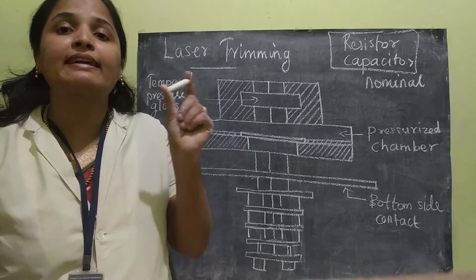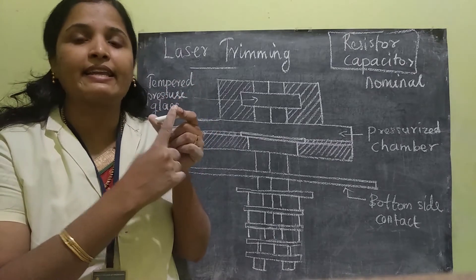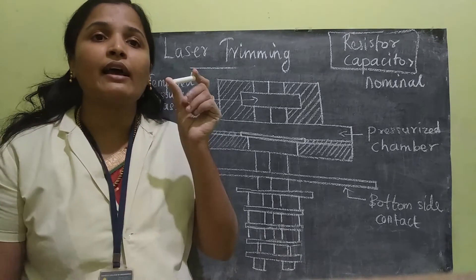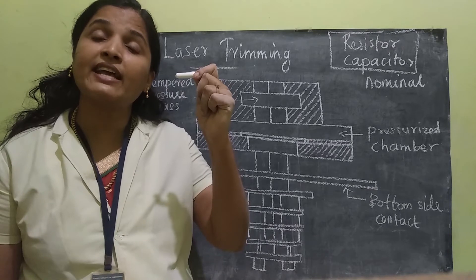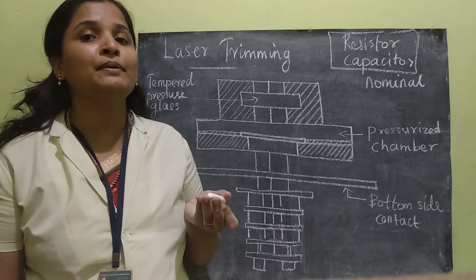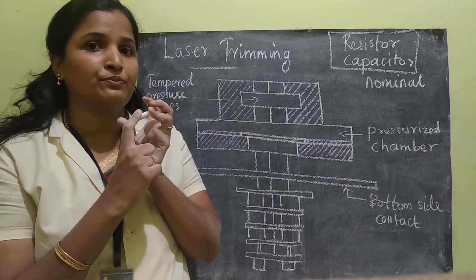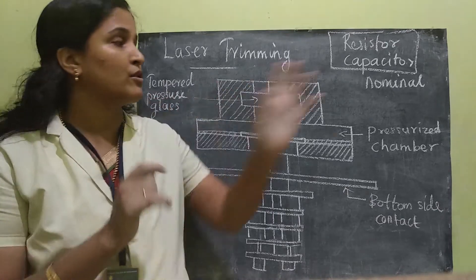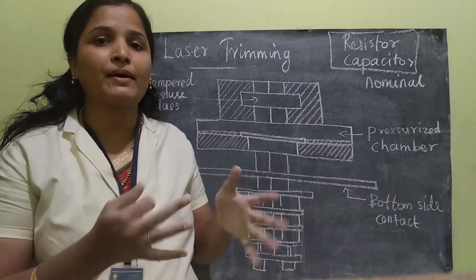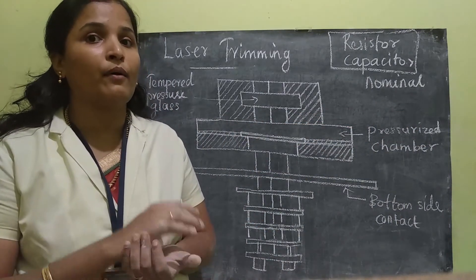If I want to increase the resistance of this particular material, I will just reduce the area by trimming or removing some portion of the material. The area will be reduced, and if the area is reduced, the resistance will be increased. By using this concept, I can achieve the required or desired resistance value. The required means the nominal — the required resistance value or capacitance value can be achieved. This is the principle of laser trimming.